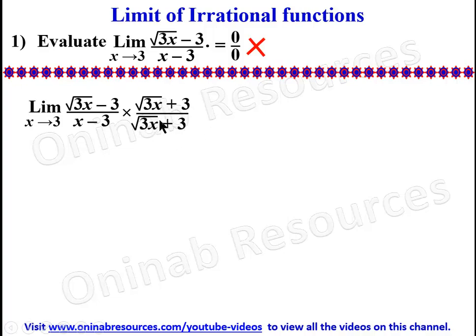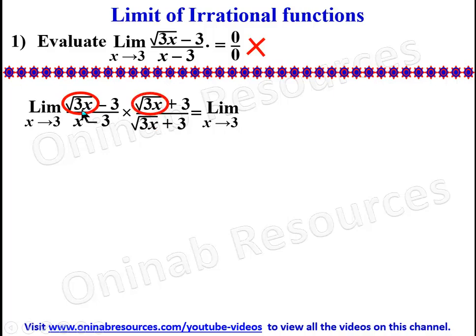We multiply by root(3x) plus 3 over root(3x) plus 3, which is the same as multiplying the whole limit by 1. Expanding using the method for a binomial and its conjugate — multiplying corresponding terms — we get: root(3x) times root(3x) gives 3x in the numerator.